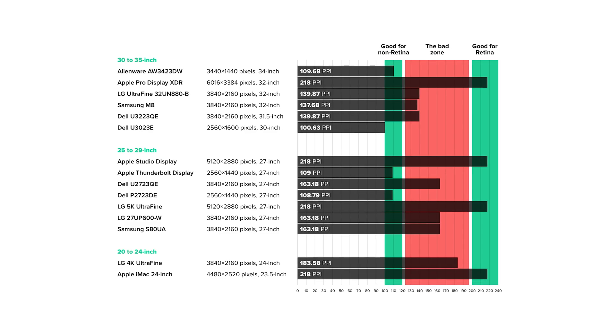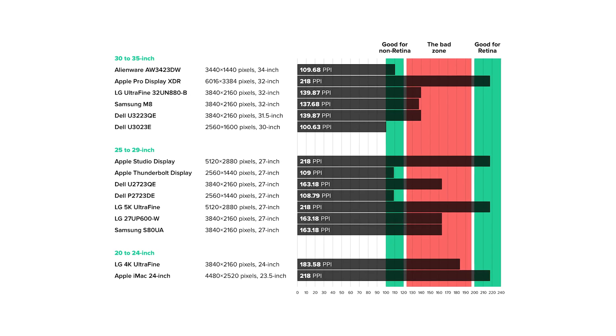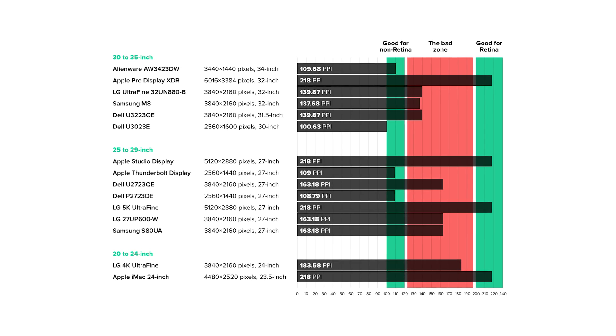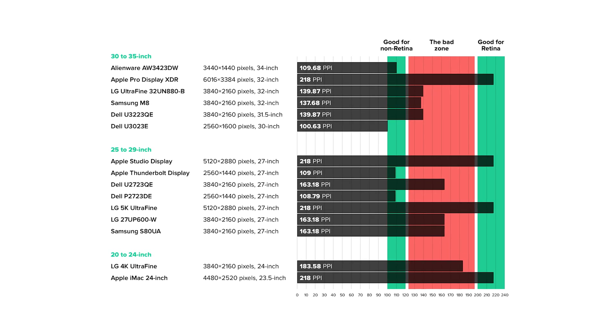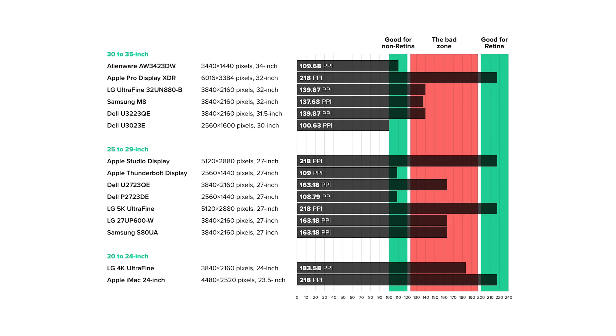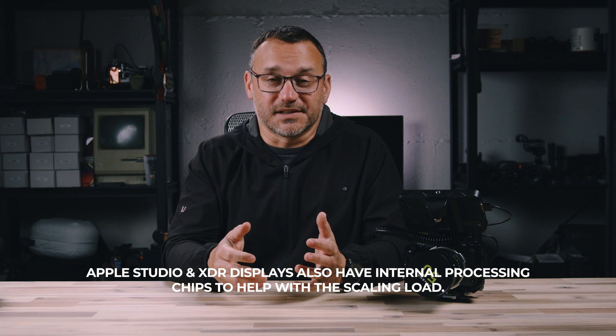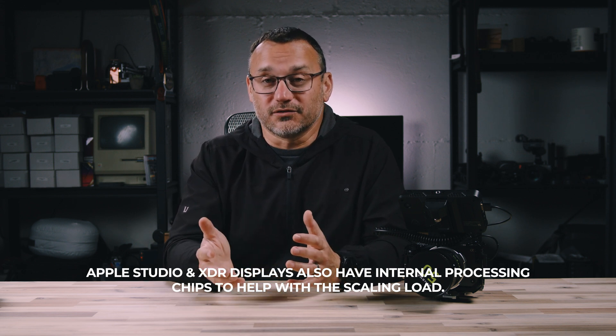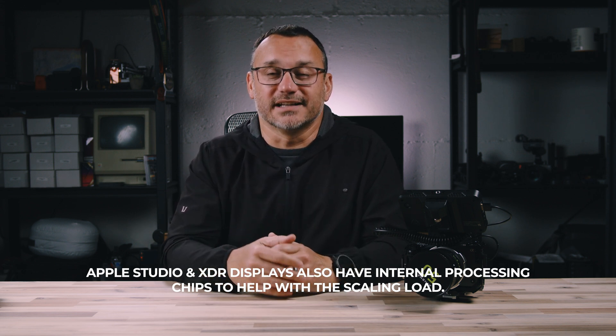There's a cool slash irritating graphic I found online that shows a lot of different displays and whether they're good for non-retina, good for retina, or fall in the 'not good for either' portion of the scale — and most displays tend to fall in that area. Of course, all of Apple's displays are great for non-retina or retina because they're designed to operate with those specific resolutions, but most monitors designed for PCs are not going to have the appropriate scaling for Mac OS.